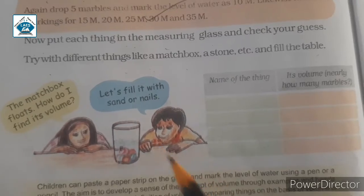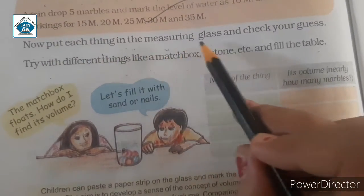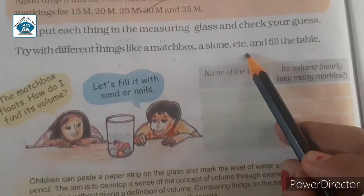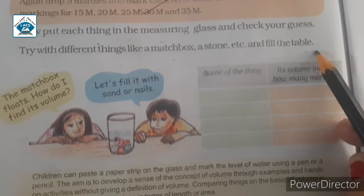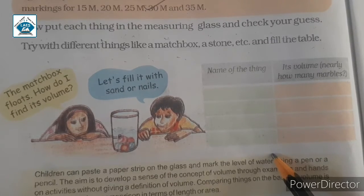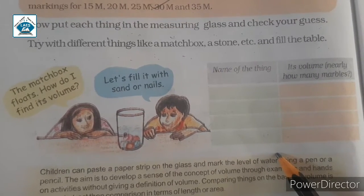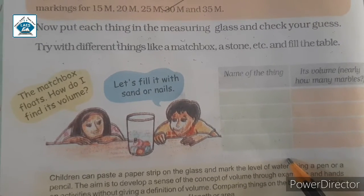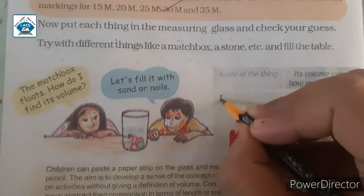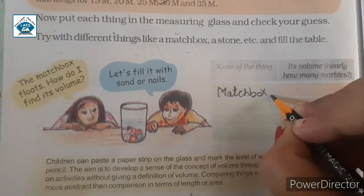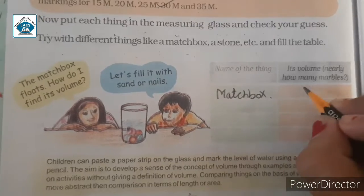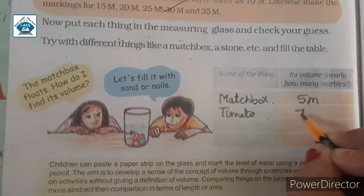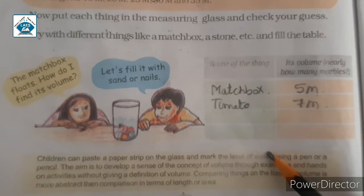Here is an activity. Put each thing in the measuring glass and check your guess. Try with different things like a matchbox, a stone, etc., and fill the table. You have to collect some things — like a matchbox or a vegetable like a tomato — and find its volume by seeing how many marbles' worth of space it occupies. For example, a matchbox might have a volume of about 5 marbles. You have to do this activity yourself.